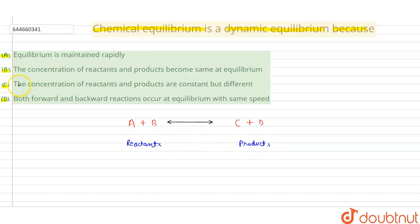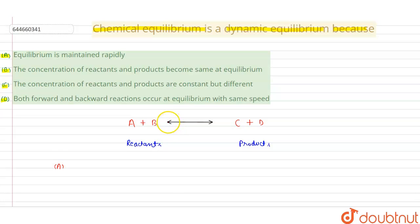Option A says: equilibrium is maintained rapidly. This is not correct because chemical equilibrium is dynamic, and it takes some time — T1 for the forward reaction from reactants to products, and T2 for the backward reaction from products to reactants. So option A is false.